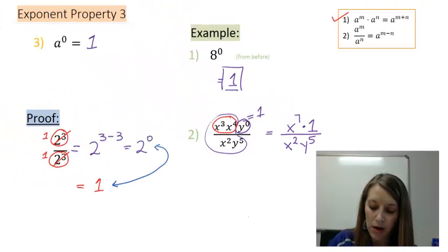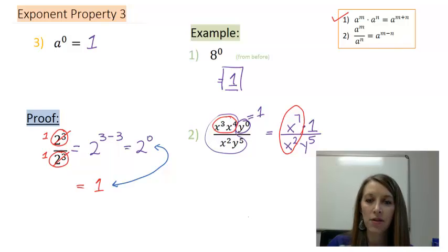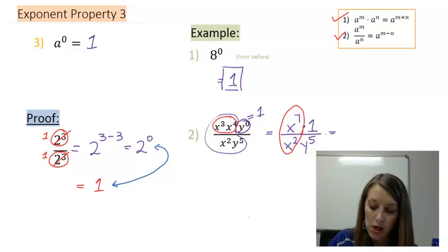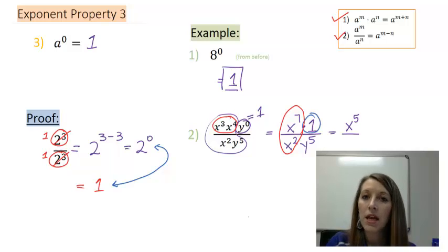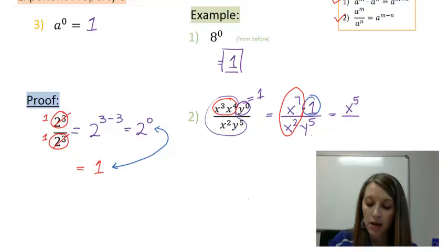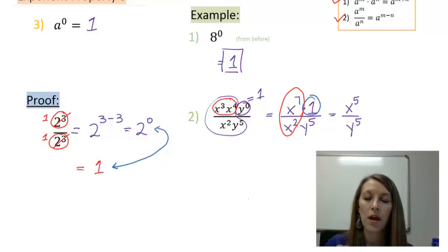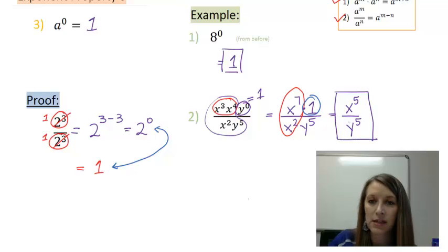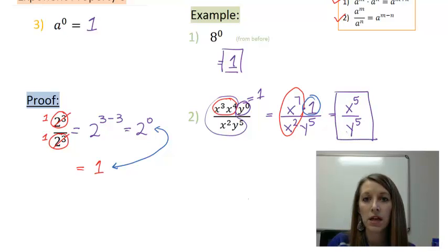Alright, the second step in this problem here, I can simplify this x to the 7th over x squared. That uses property number 2. I subtract those exponents. So x to the 7th divided by x squared gives me x to the 5th. Now I really need to multiply that by 1 here, but that goes back to the identity property. Anything times 1 is itself, so I don't need to put times 1 up in the top. And in the bottom I still have y to the 5th, so I just copy that over. At this time, I know that I'm finished because I don't have any more like bases. I have a base of x and a base of y, and I cannot combine those in any sort of way, even though my exponents may match here. So I have my final answer to this problem.